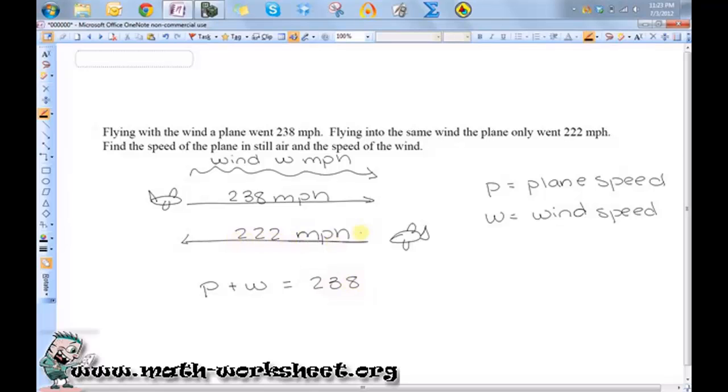Now, this one, when it's going against the wind, this is decreasing the speed. So that means it's the speed of the plane minus the speed of the wind equals 222.